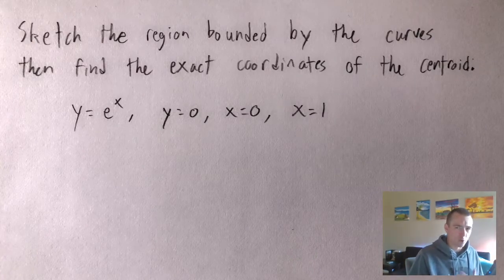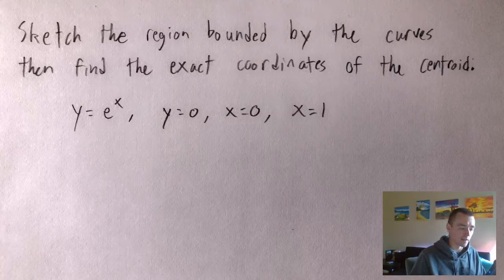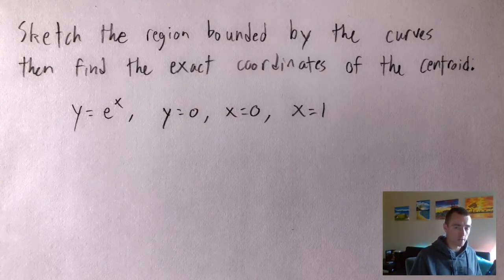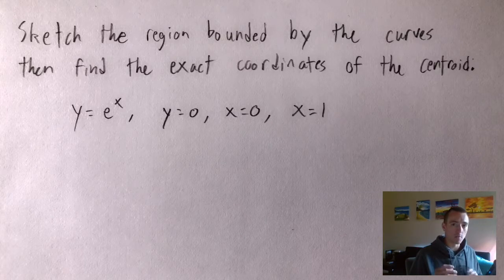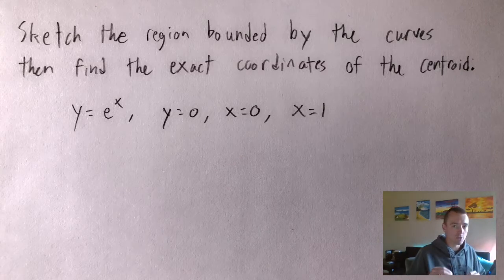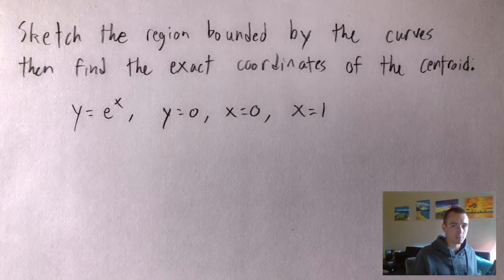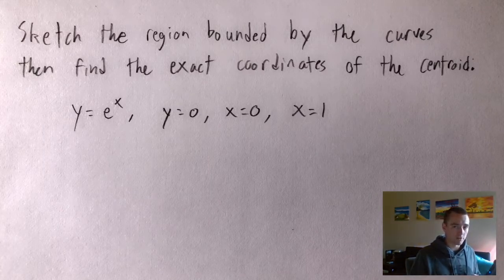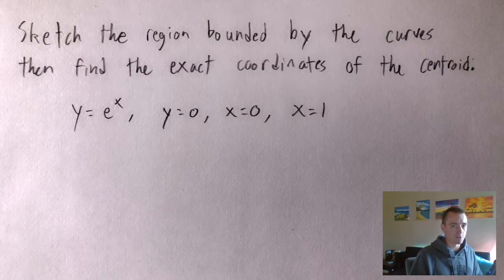Before I jump into this problem I want to quickly mention the difference between a centroid versus center of mass. In a lot of contexts they're going to be the exact same point. Center of mass usually refers to finding the center point of some object that actually has mass, like a thin plate. Whereas a centroid is used to find essentially the center of mass of a 2D region on an xy plane, which doesn't actually have mass — so center of mass doesn't really make sense there. But for any uniform density object, the centroid and the center of mass are going to be the same point, using the same formula.